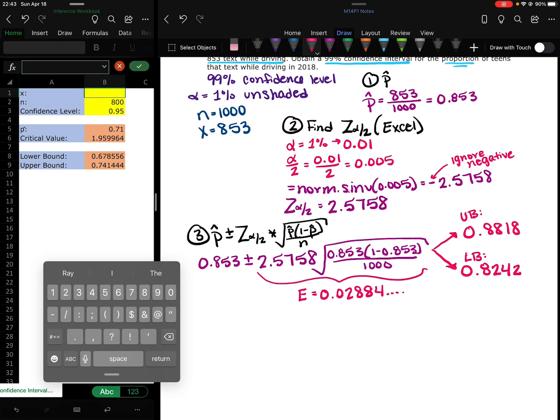So we have 853 for x, we have 1,000, and this was a 0.99 confidence level. It was a 99% confidence interval, so 99% as a decimal.